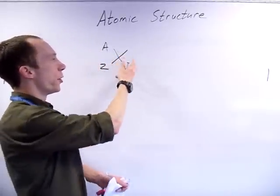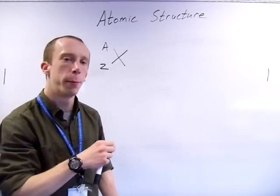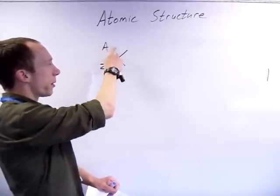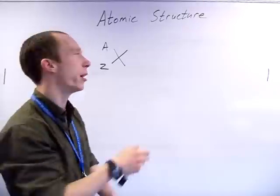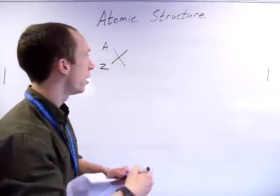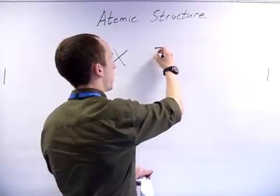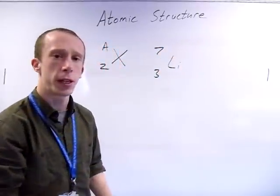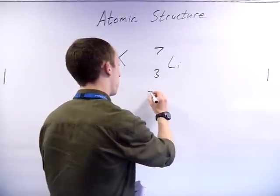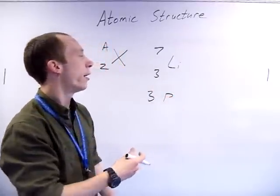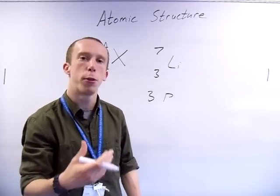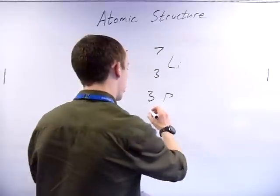To read this: if you want to know how many protons in the element, take the smaller number. If you want to know how many neutrons, it's atomic mass take away atomic number, because the atomic mass tells you the amount of protons and neutrons combined. For example, the bottom number tells me the number of protons - three protons. Top take away bottom: of that seven, three are protons, so the other four must be neutrons.